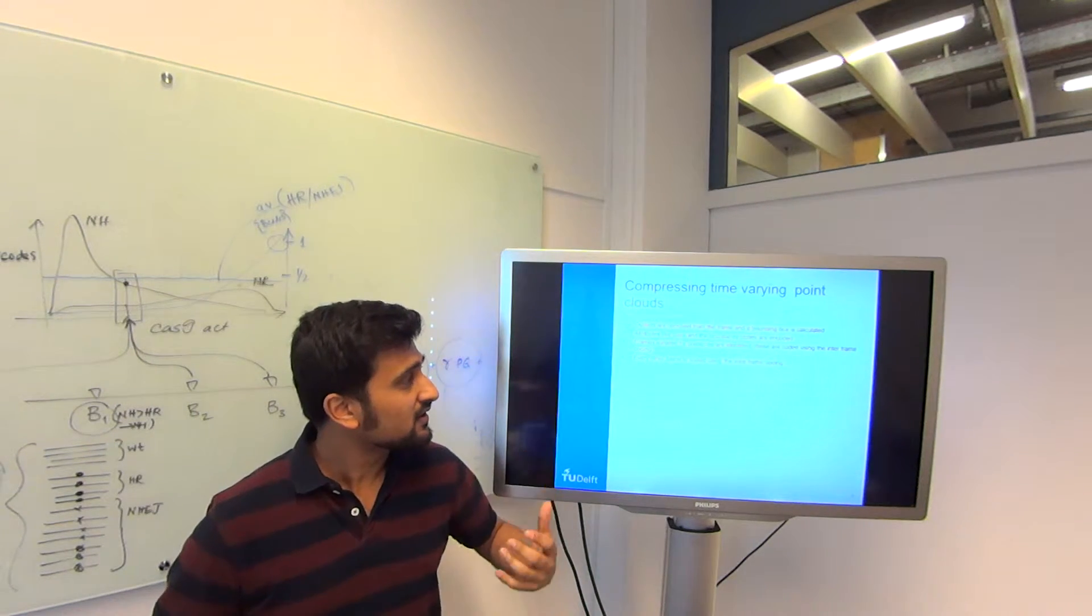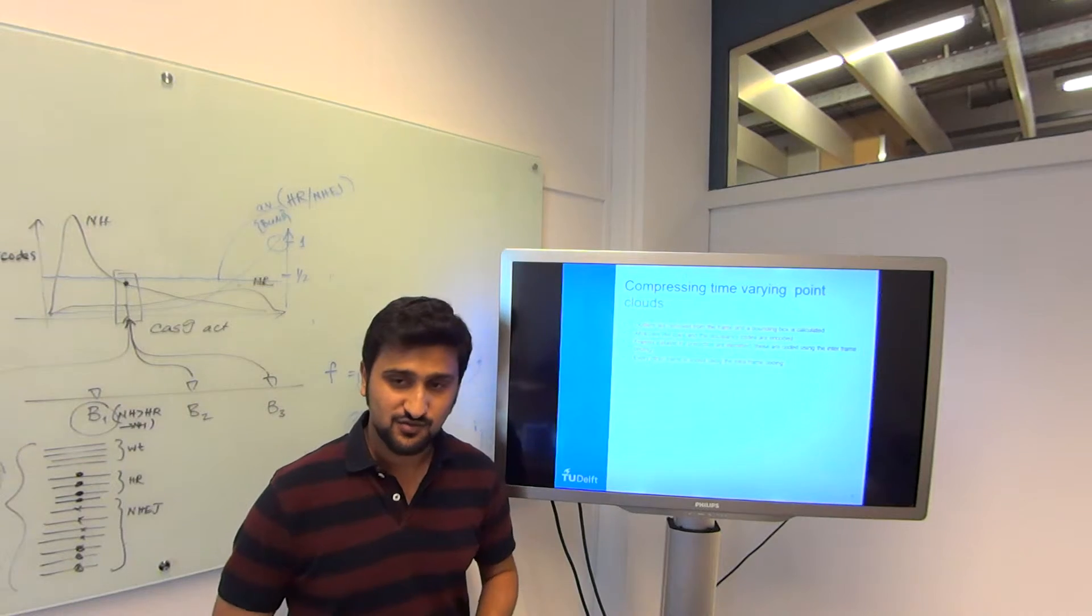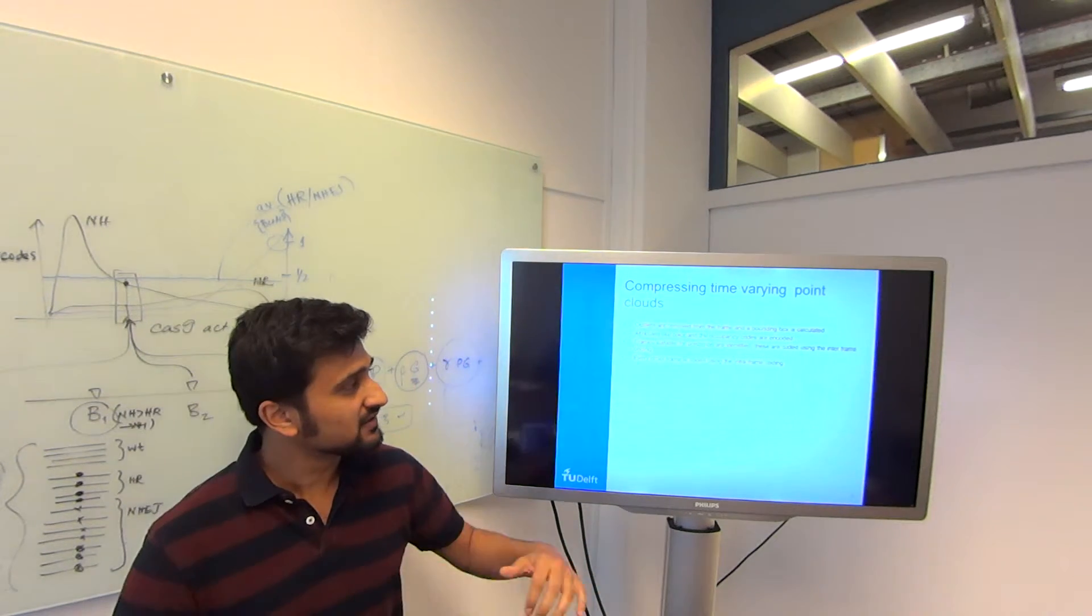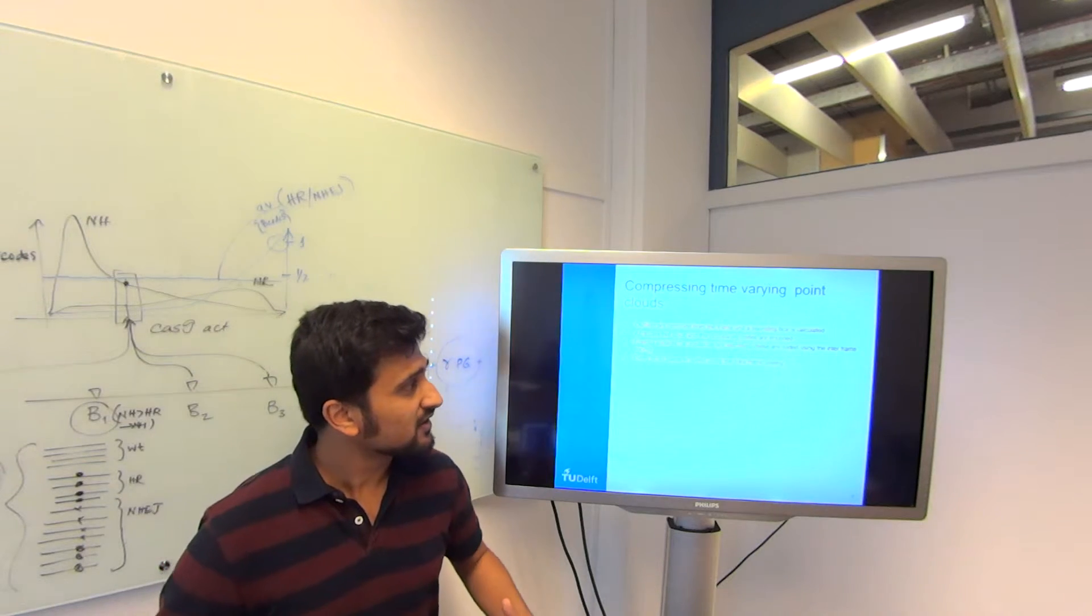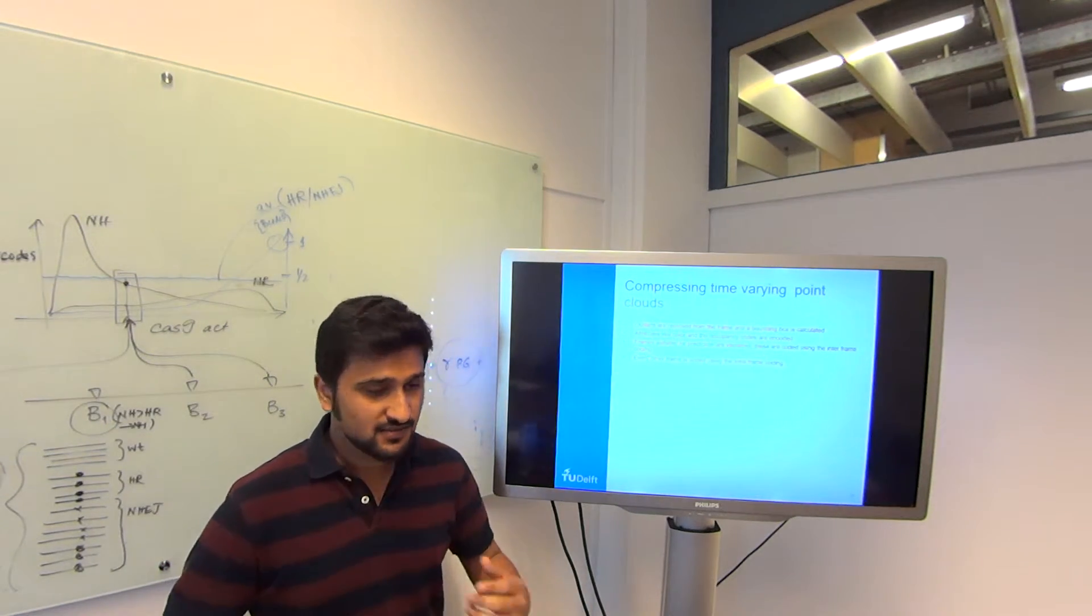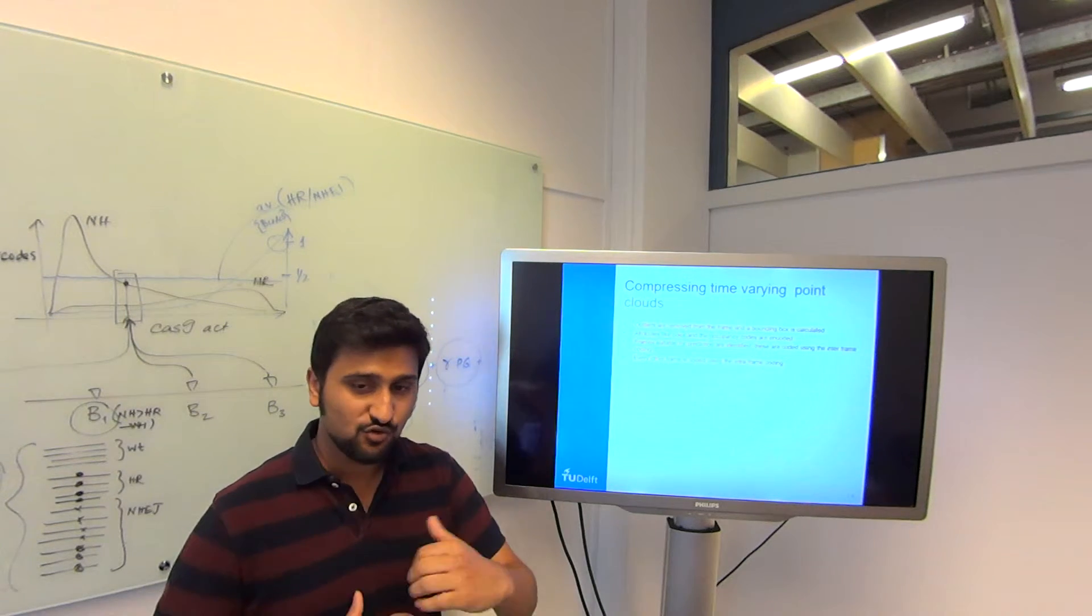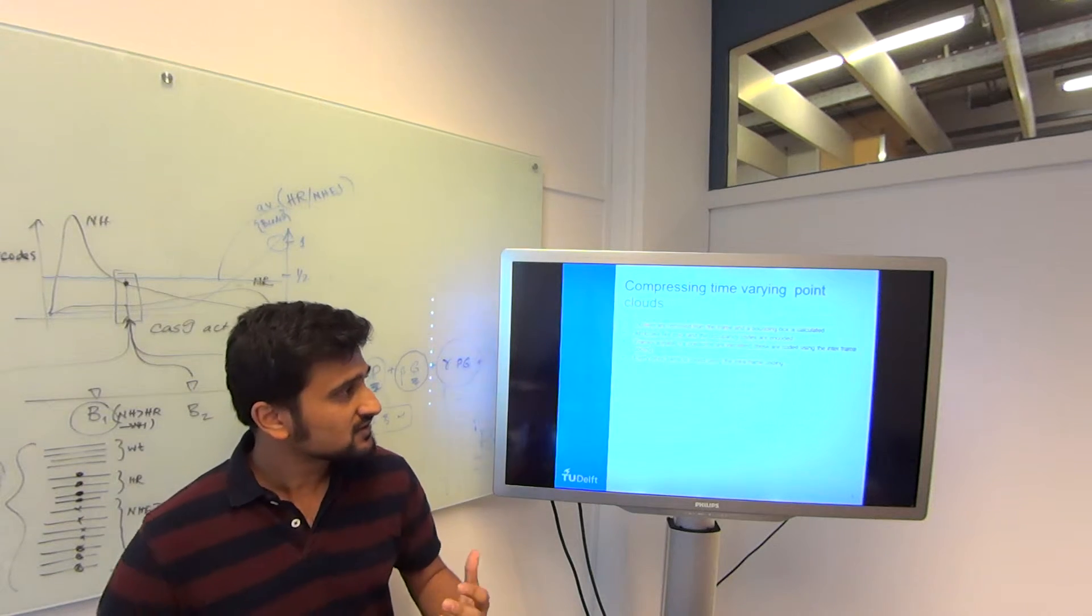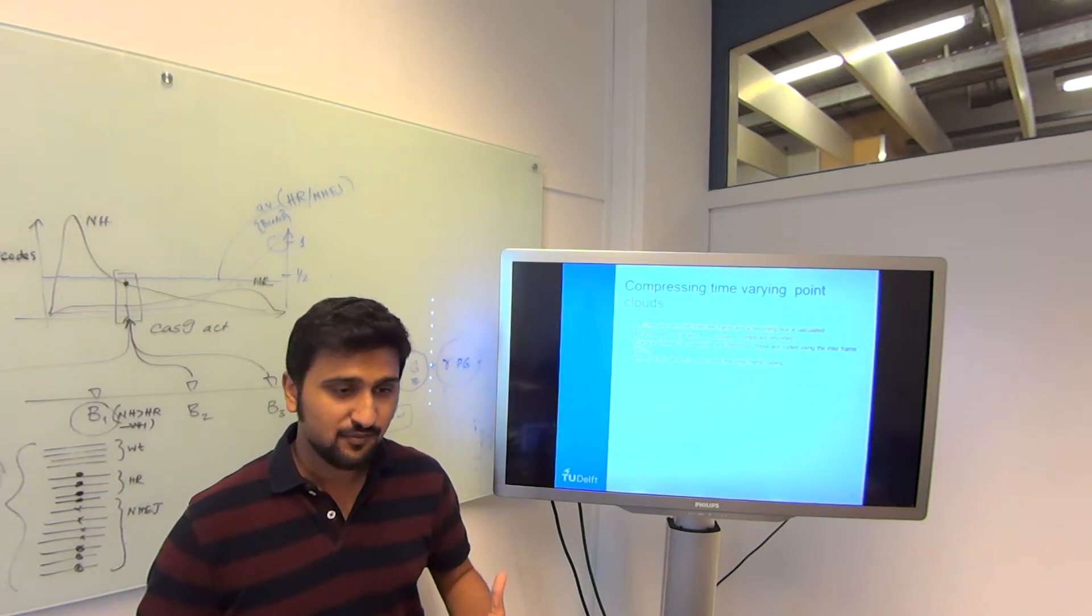The other thing is you need to encode the attributes efficiently. One solution that they used for the occupancy codes was they did a bit reordering to reduce the entropy within these codes. That way it was more efficient to encode them and it took less space. For colors, they just encoded the difference between two macro blocks in the same tree. This is how you do the static part.